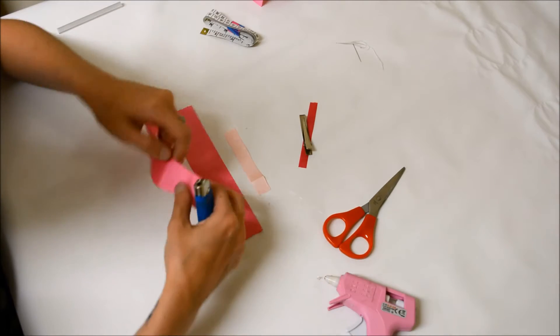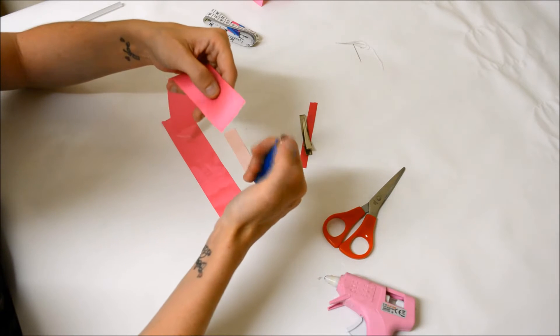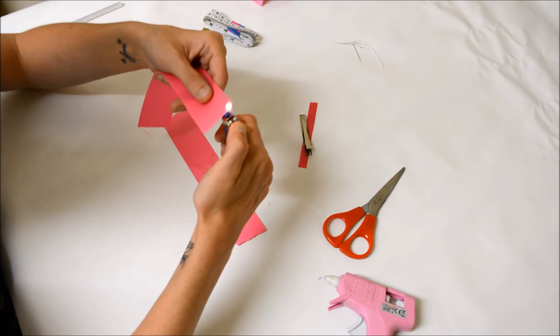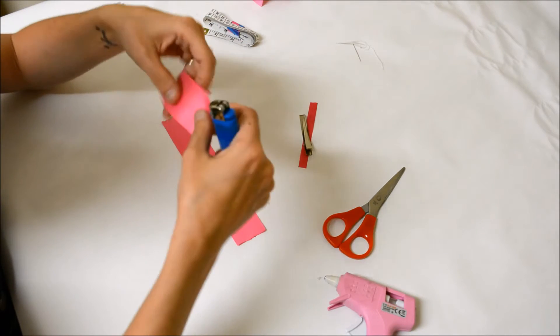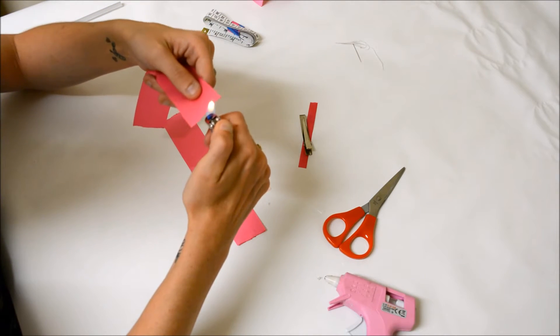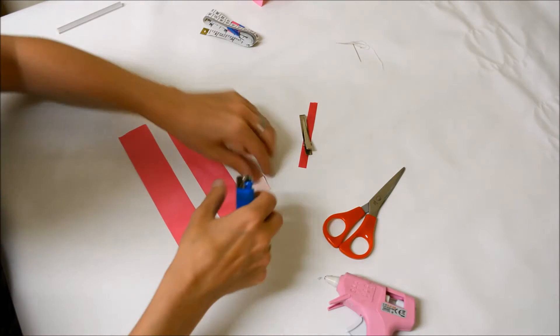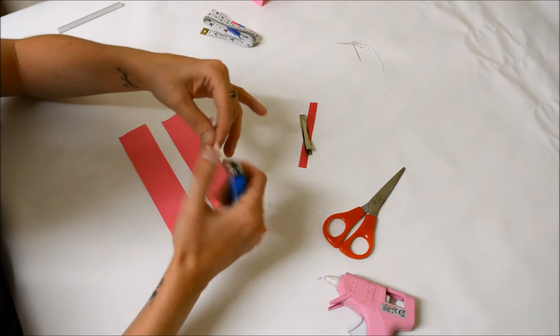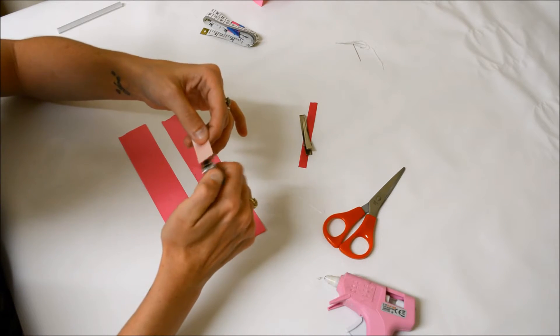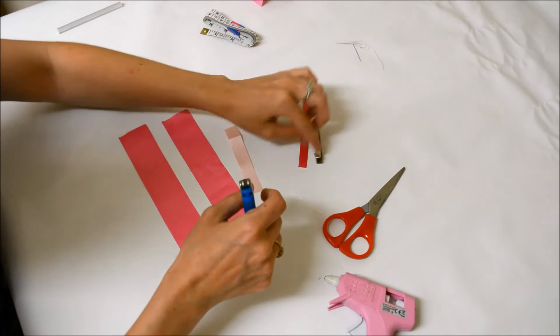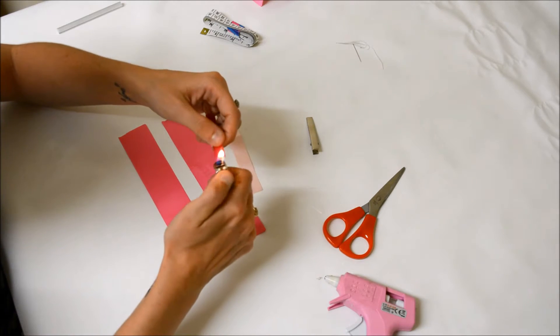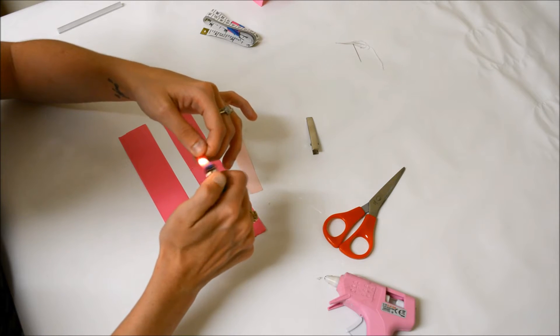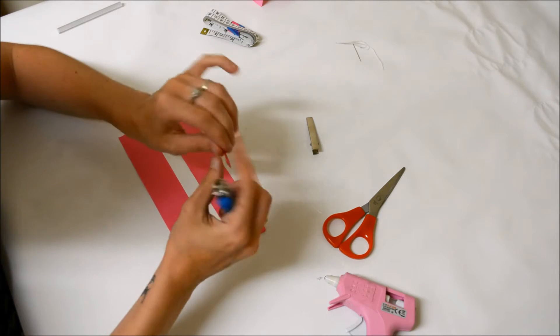Now first off I'm just going to show you how to heat seal your ribbon. So take your ribbon and a lighter and gently run the flame along the edge. This just prevents any fraying, which would make your bow look tatty and a bit old. Now you can tell when your ribbon has been heat sealed because it forms a little hard ridge at each end, which when you touch it you can feel.